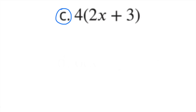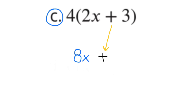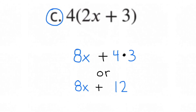C. 4 times (2x plus 3). 4 times 2x is 8x. Bring down the plus sign, and 4 times 3 is 12. The equivalent expression would be 8x plus 12.